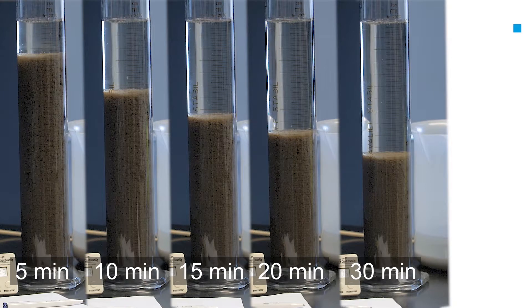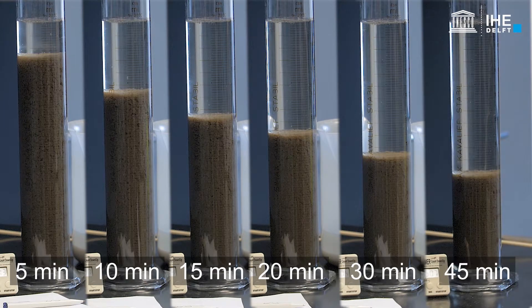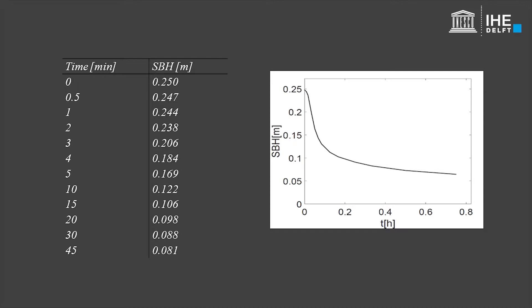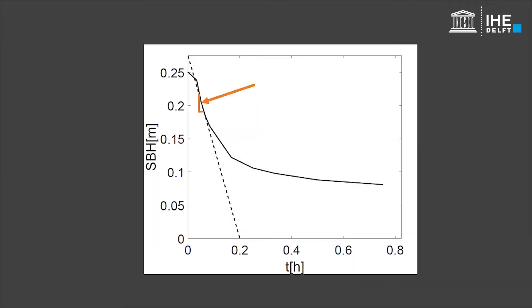Recording the height of the suspension-liquid interface at these time intervals results in a curve showing the evolution of the sludge blanket height over time. The slope of the linear part of the batch curve is a measure of the zone settling velocity at the initial concentration X.